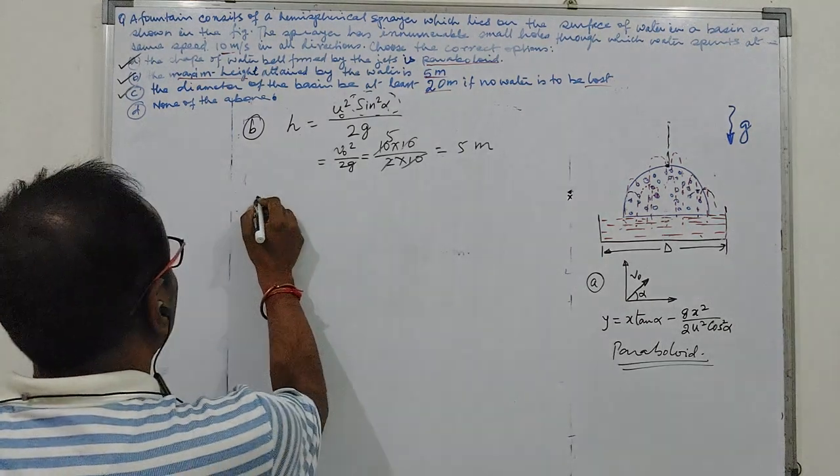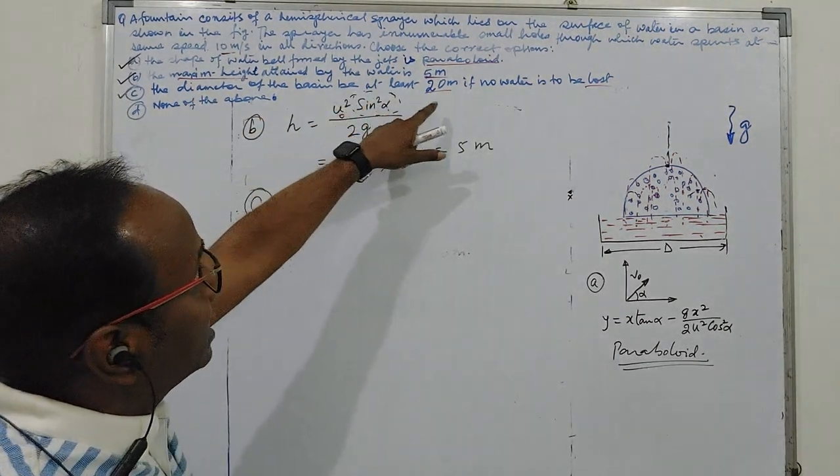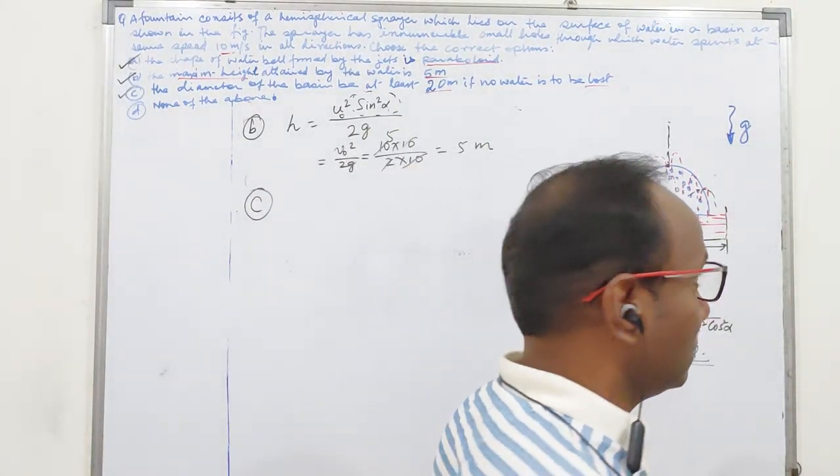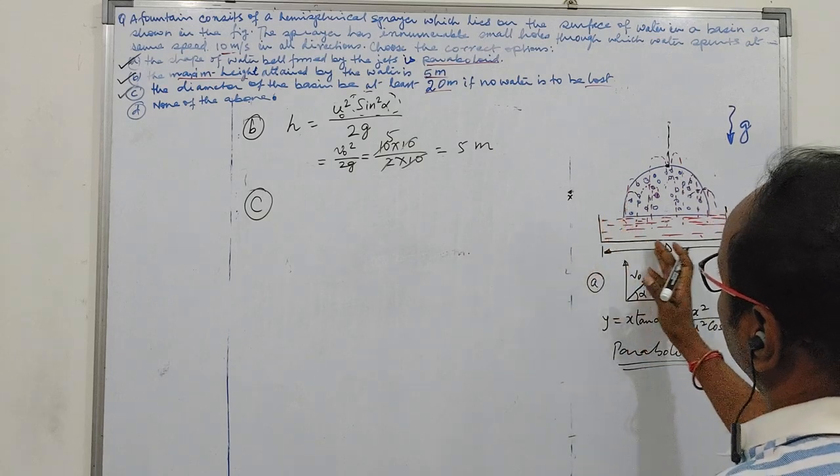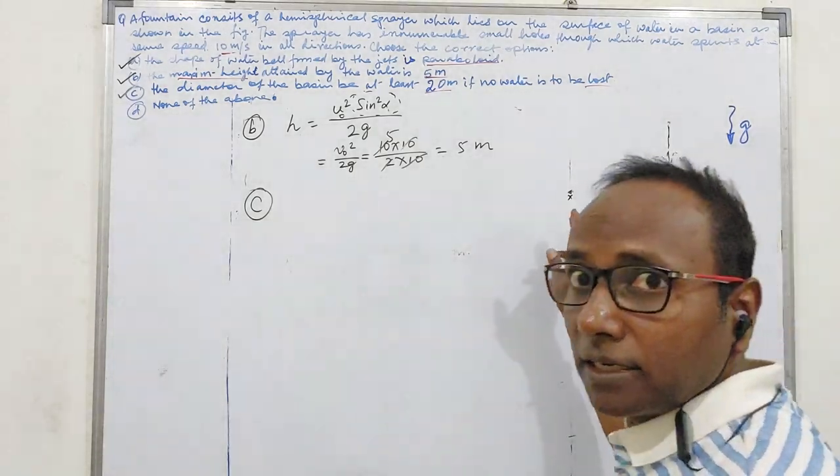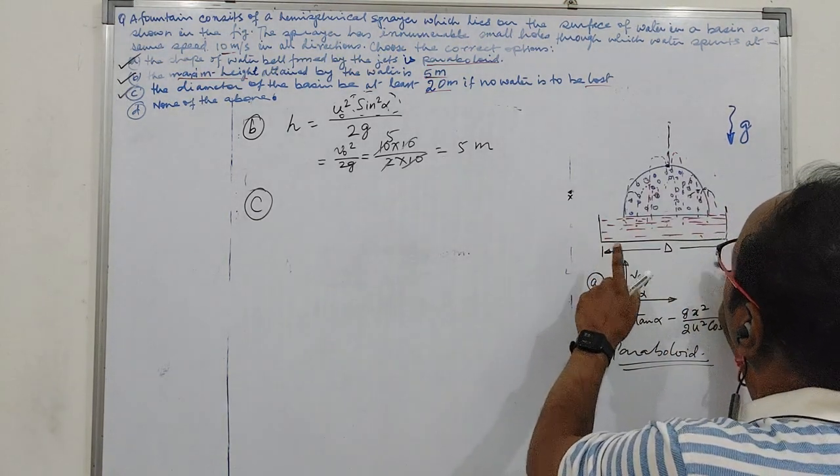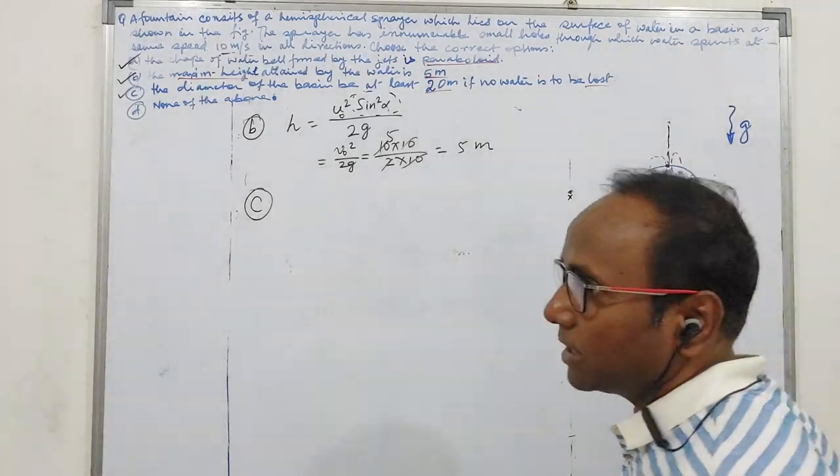Now let us go for C part. The diameter of the basin will be at least 20 meter if no water is to be lost. What does it mean to say this is the basin boundary? So what is the minimum diameter of this so that no water is being lost.